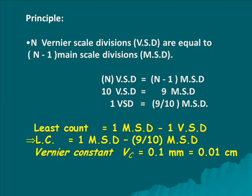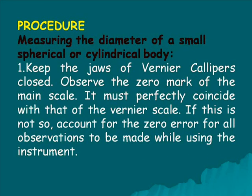So the least count is also known as Vernier constant, VC, is equal to 0.01 cm.